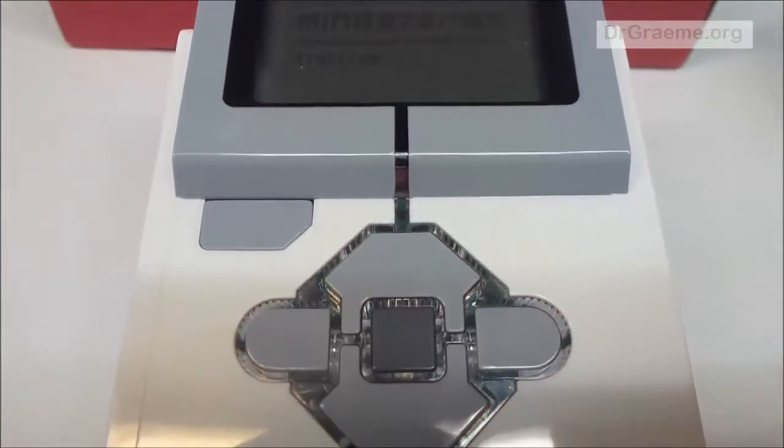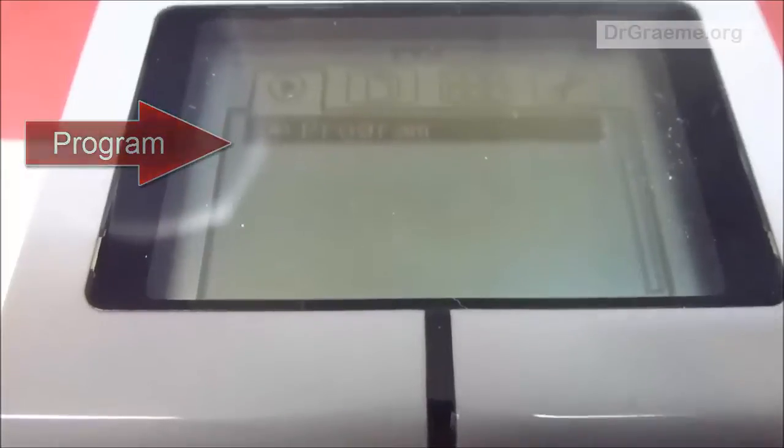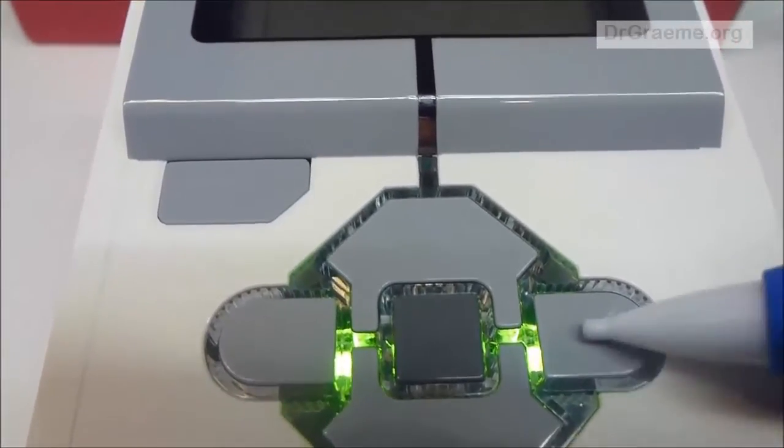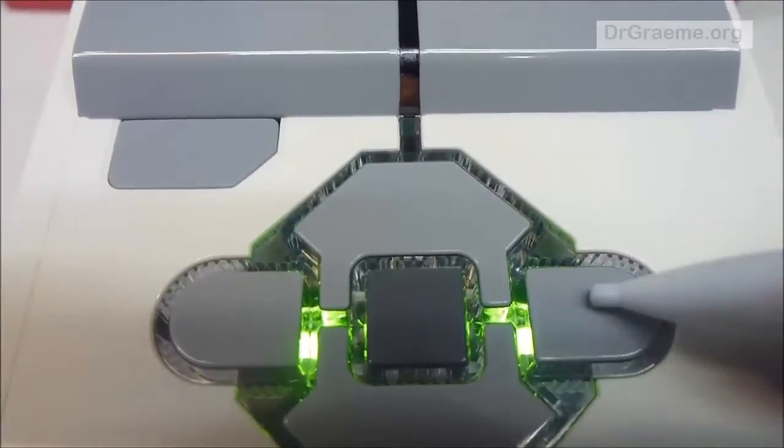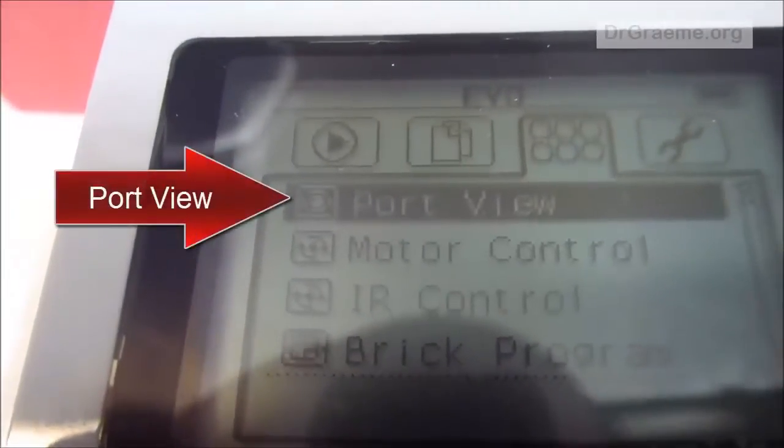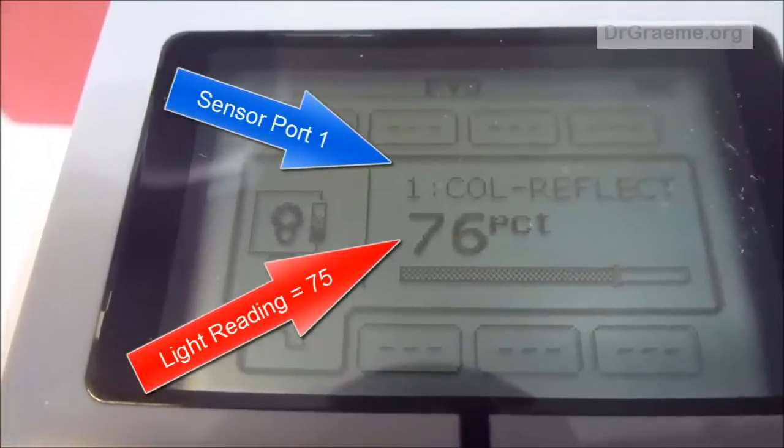When we start our EV3 up, we get to program initially. We press the right-hand button and it will go to project. Press the right-hand button again. And it will go this time to Port View. To select Port View, we press the center button. And you will see that it says our color reflector is sensor port 1 and light reading 75.